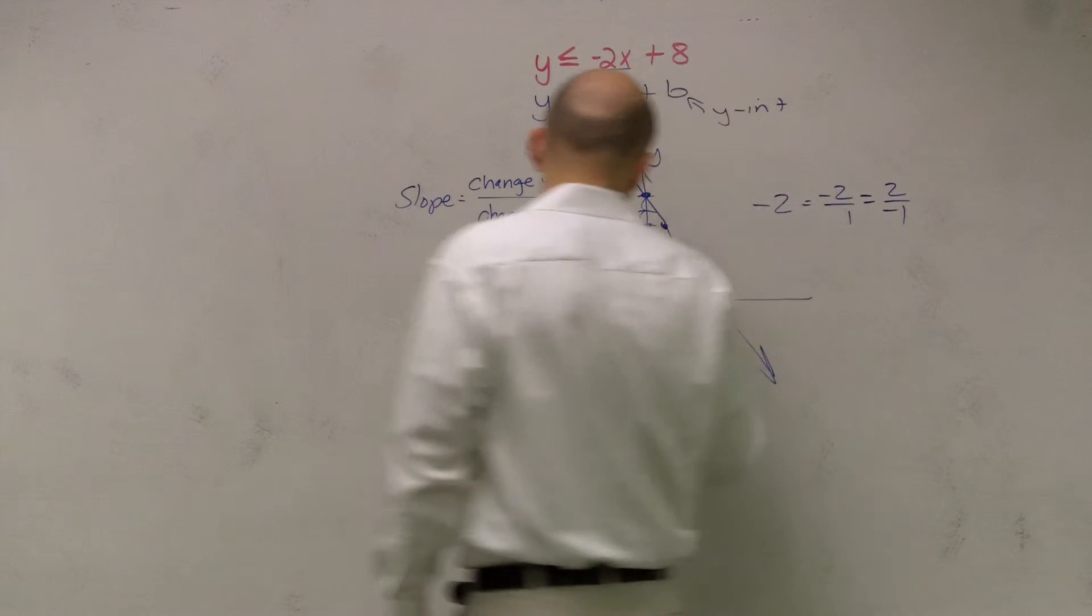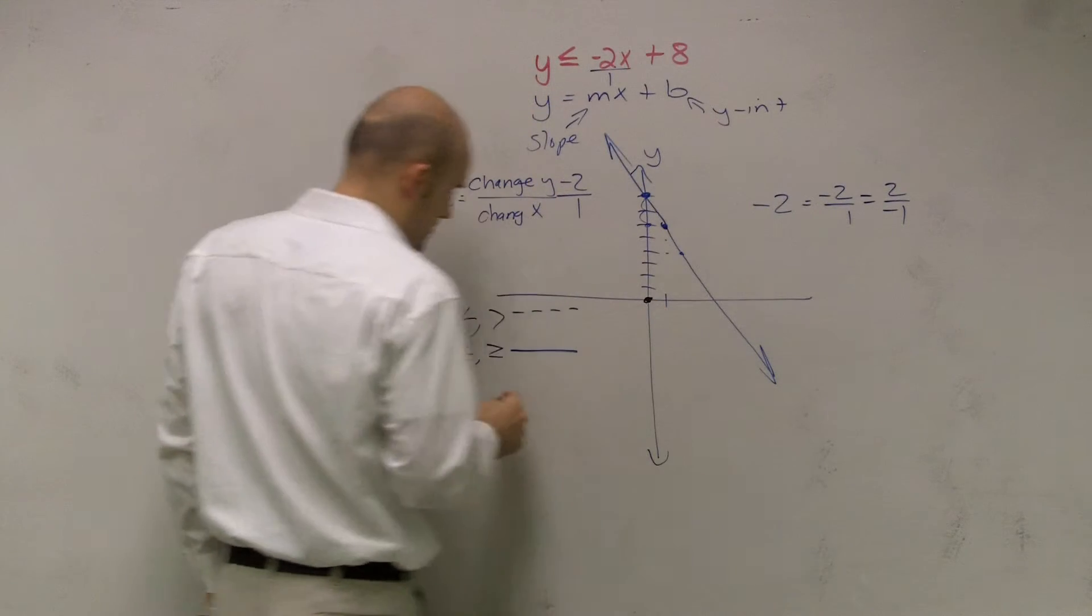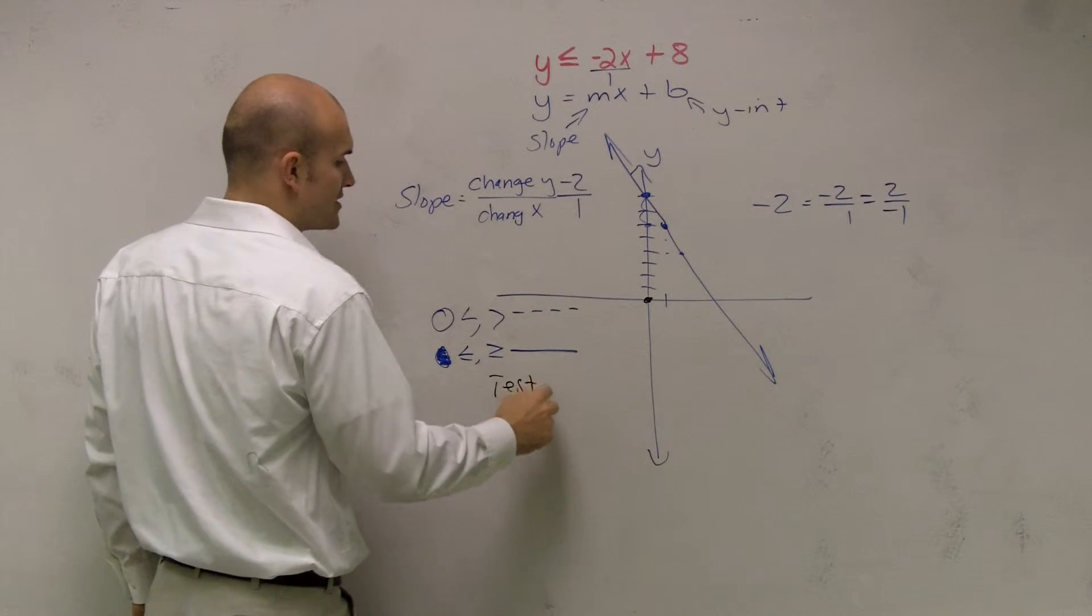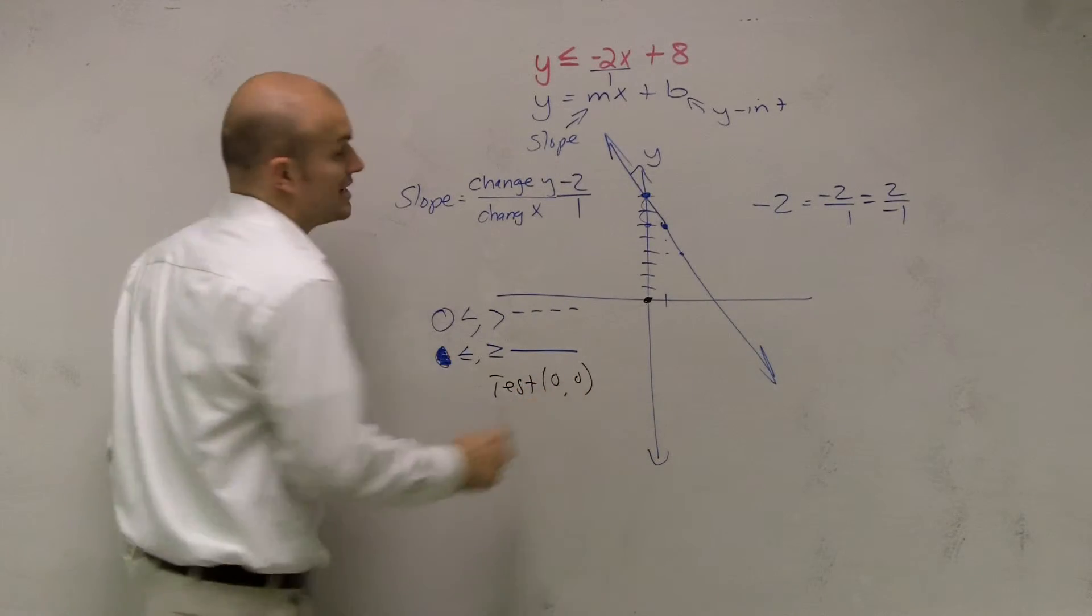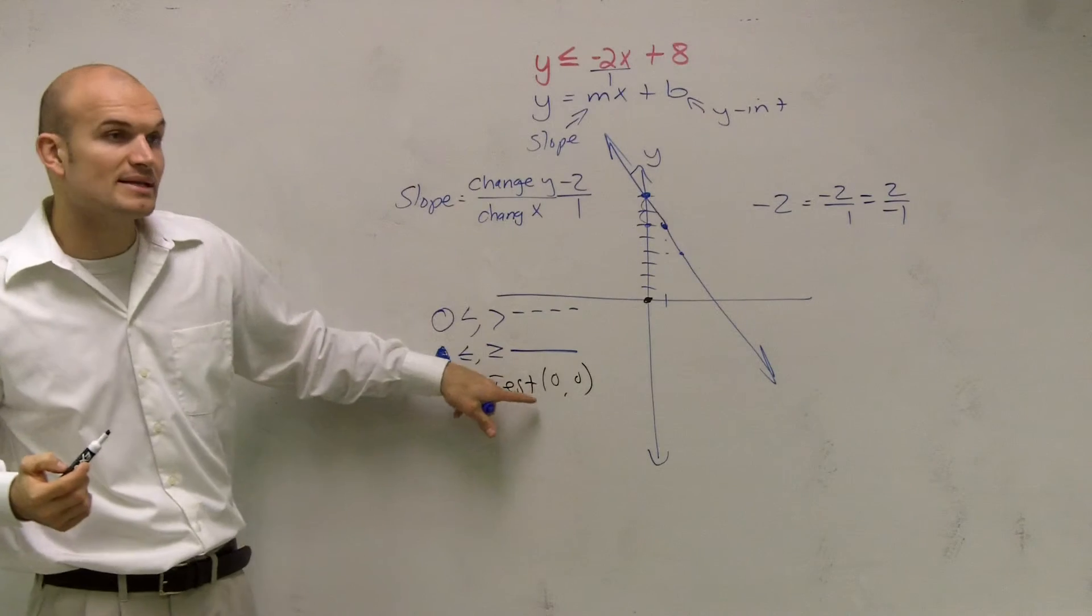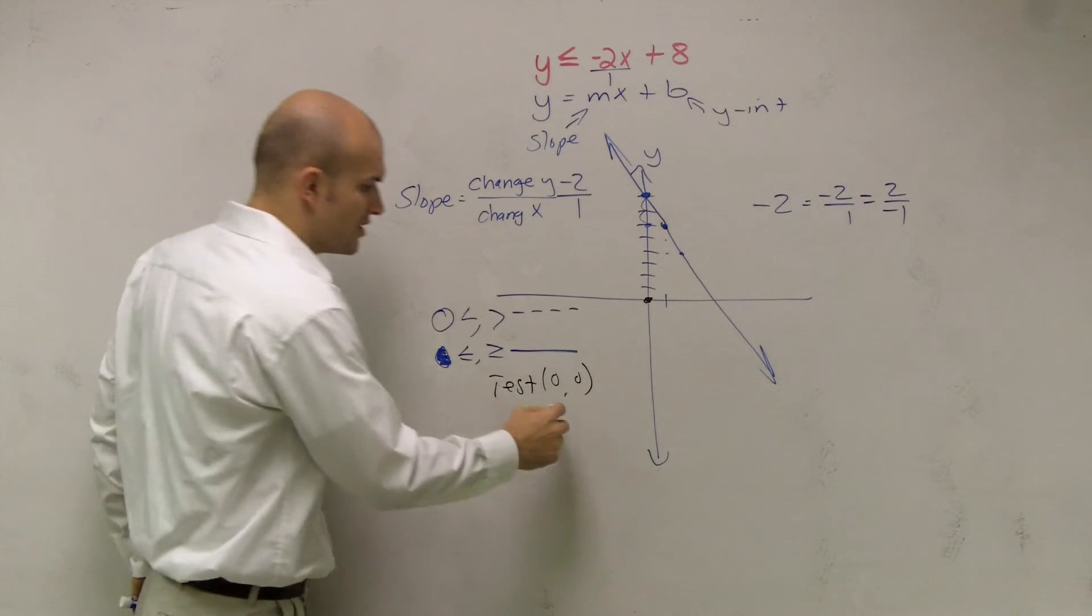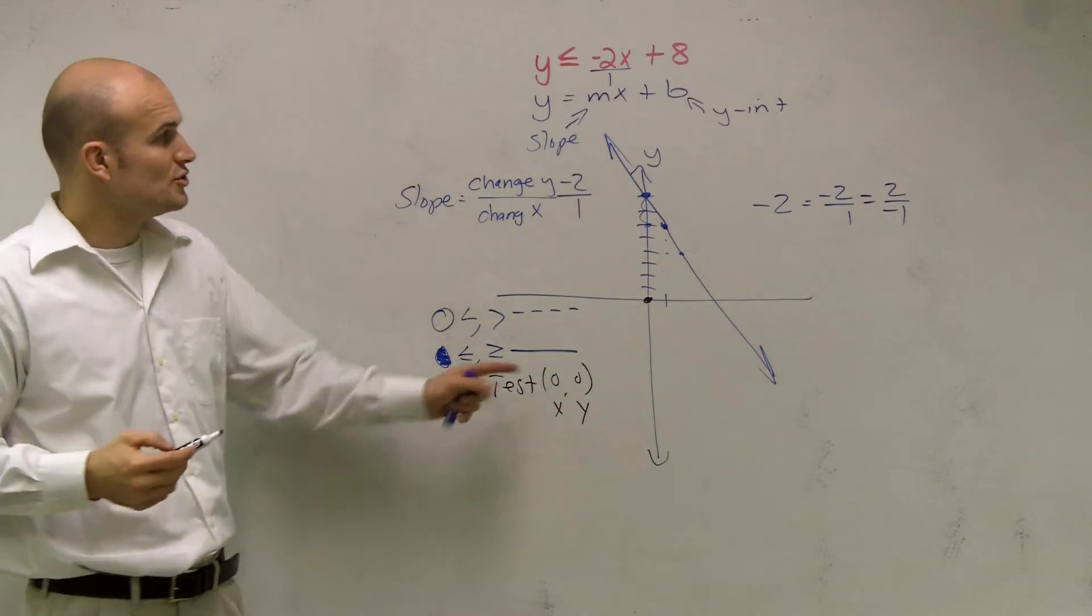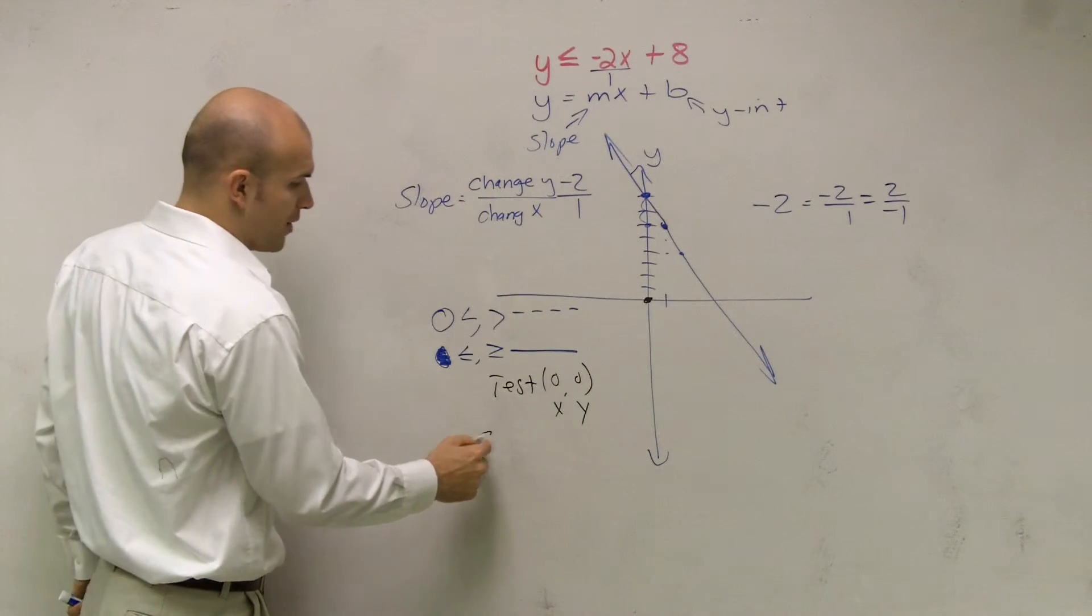And the only time you don't choose (0, 0) is when your line goes through it, which I'll give you an example of later today. So now I'm going to take (0, 0). Remember, (0, 0) is an x and a y coordinate, so you plug 0 in for x and 0 in for y.